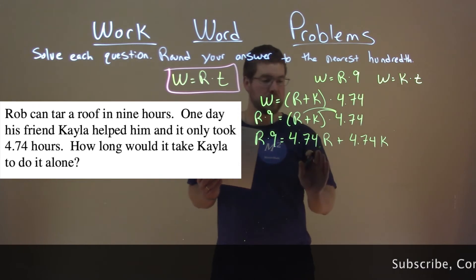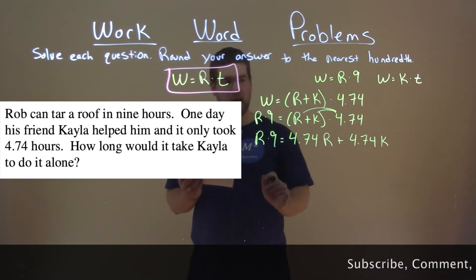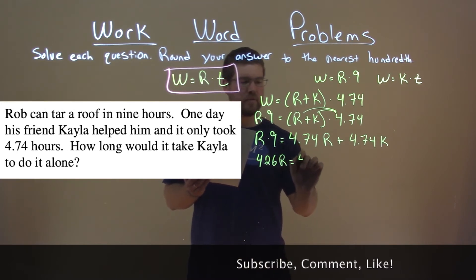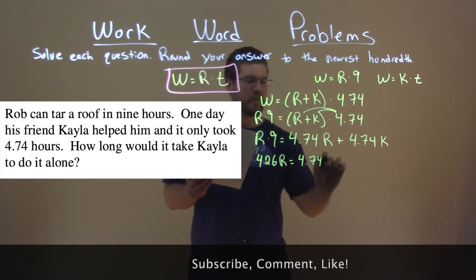Let's get the r's together. So I'm left with 4.26r equal to 4.74k.